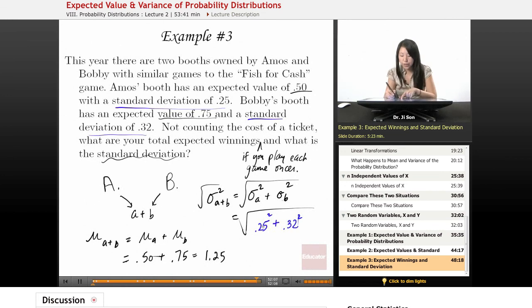And the reason we have to do this first is that the square root of this sum is not going to be 0.25 plus 0.32. There's order of operations. You have to do the squares first before adding them together. And if you don't, that's going to change the value, right? So let's see what we get.